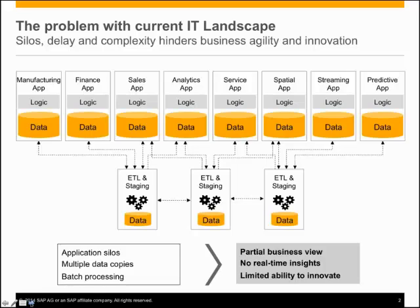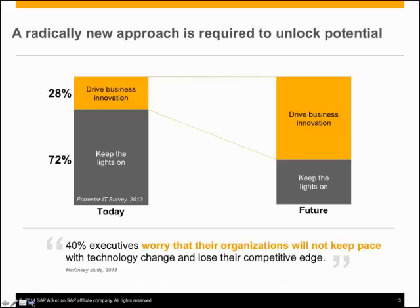Still 72% of IT budgets worldwide today are spent on keeping the lights on and not driving business innovation. We need to invert that — make 72% drive business innovation and reduce the time and money spent on maintenance. A McKinsey quote notes that 40% of executives are scared their organizations won't keep pace with technology change and may be disintermediated, like what's happening to taxi services with Uber and Lyft, or hotels with Airbnb.